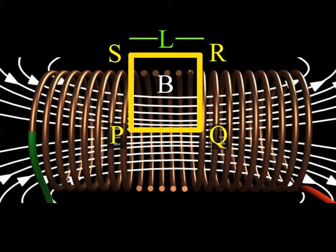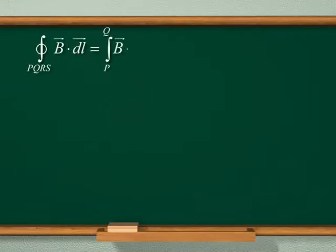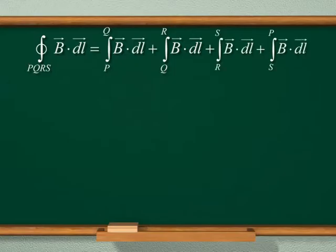The line integral of magnetic field induction B over the closed path PQRS is equal to the line integral of magnetic field induction B over PQ plus line integral of magnetic field induction B over QR plus line integral of magnetic field induction B over RS plus line integral of magnetic field induction B over SP.